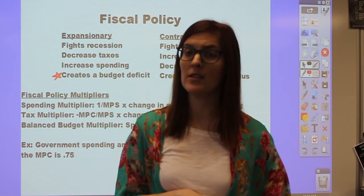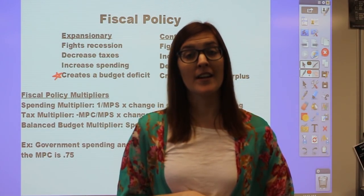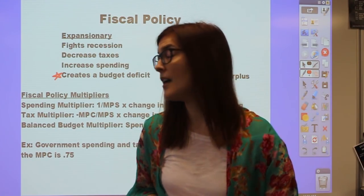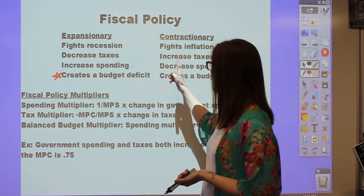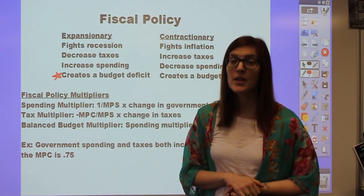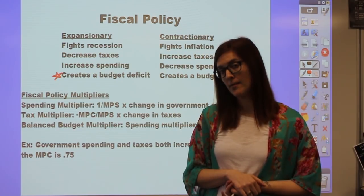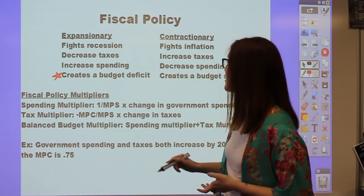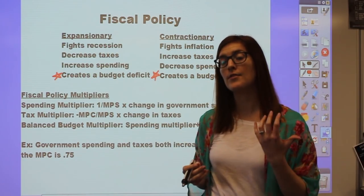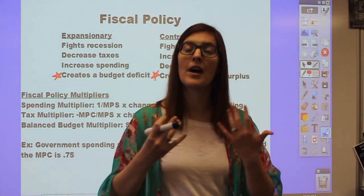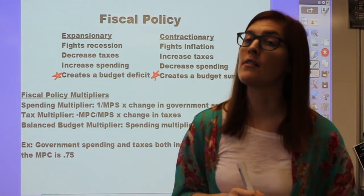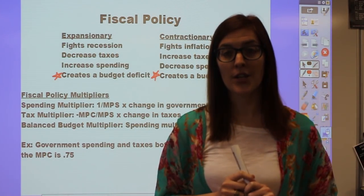Contractionary fiscal policy is when the government tries to fight inflation by shrinking C and G of GDP—increasing taxes or decreasing spending, giving consumers less money to spend. This does the opposite to the budget and creates a government budget surplus, because the government is collecting more in tax revenue but spending less, so they have money left over. Keep that in mind for crowding in later.